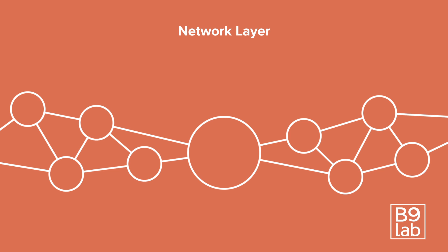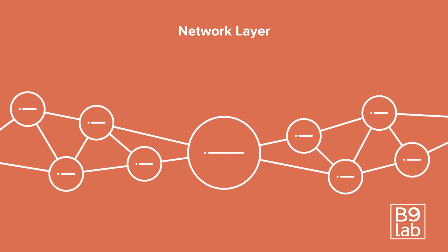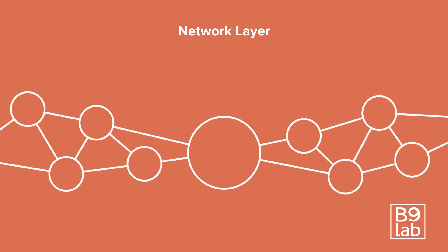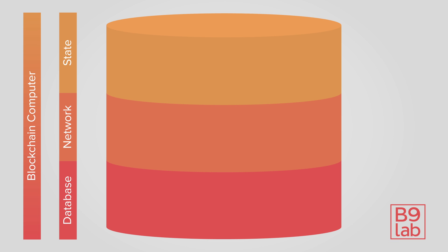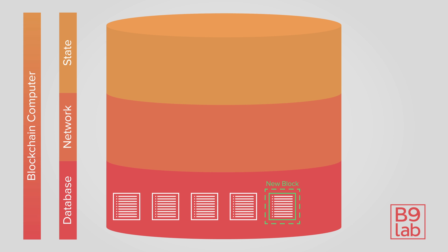In order to transfer cryptocurrency, add a new smart contract, or call a smart contract function, a node can broadcast a new transaction to its peers. The peers then pass along the transaction until every node in the network knows that our node wants to add a new transaction. A validator will eventually pick up our transaction and bundle it into a block.